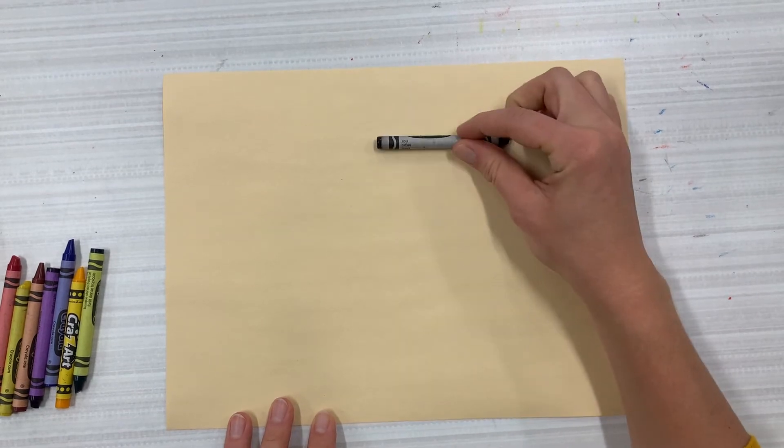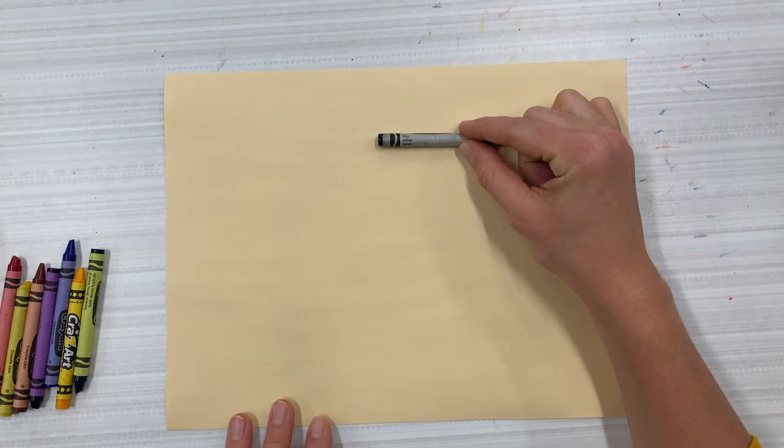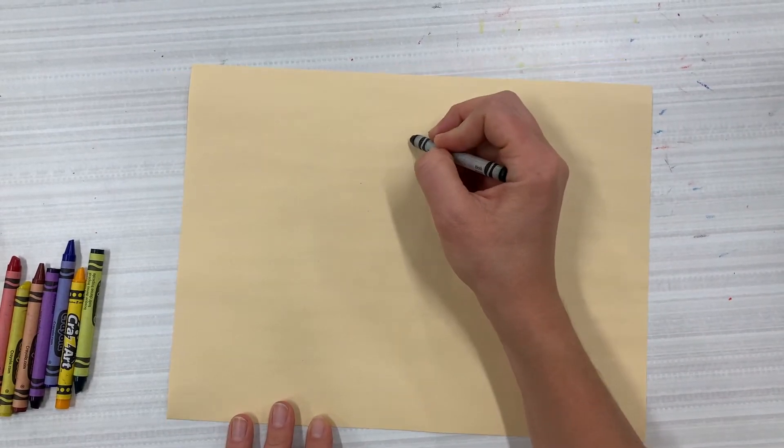Then we want to make sure that we leave some space at the top in the middle of our paper. This is where we will start drawing our first line.